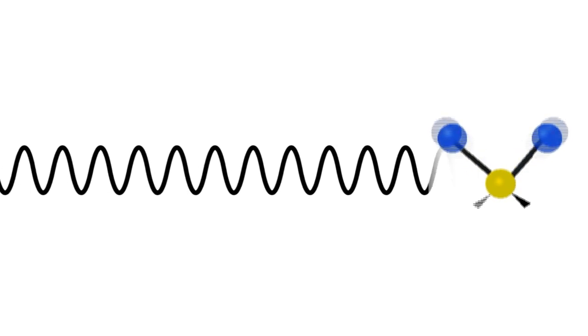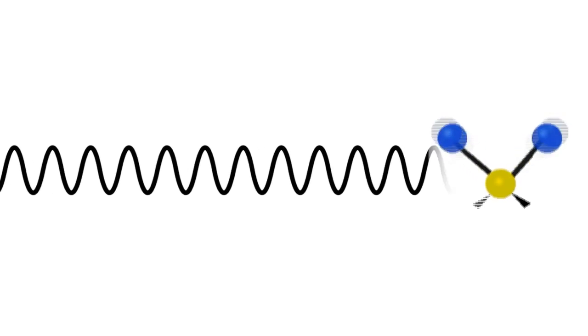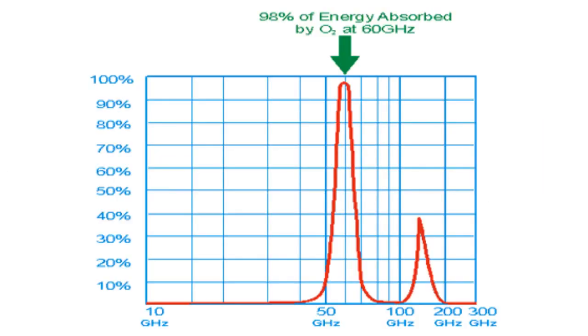The profound implications and applications of this is that all matter can be identified by its vibrational frequency signature using spectroscopy. This graph from the FCC Office of Engineering and Technology shows that 98% of the 60 gigahertz electromagnetic radiation frequency is absorbed by oxygen, the O2 molecule.